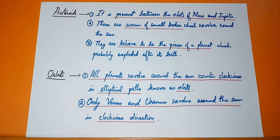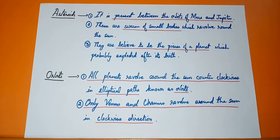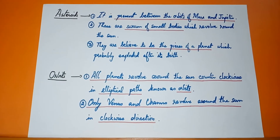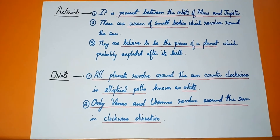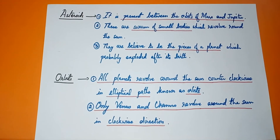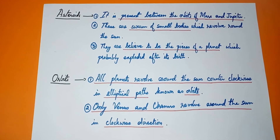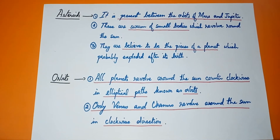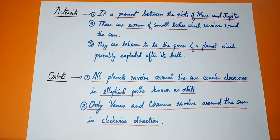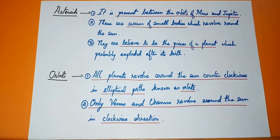The next term is orbits. All planets revolve around the sun in an elliptical path known as orbits. Most planets revolve counter-clockwise. Only Venus and Uranus revolve around the sun in the clockwise direction.